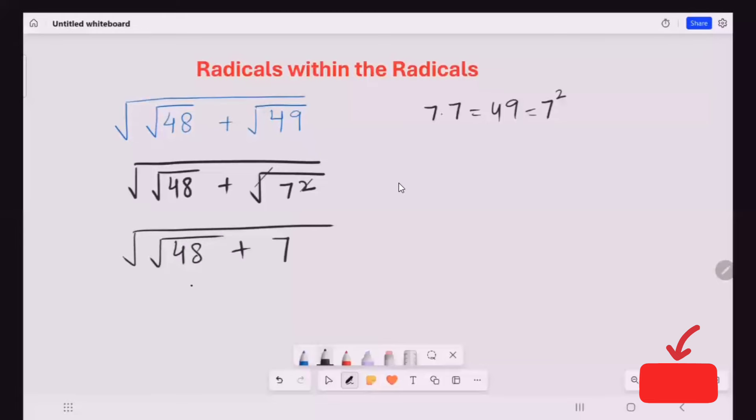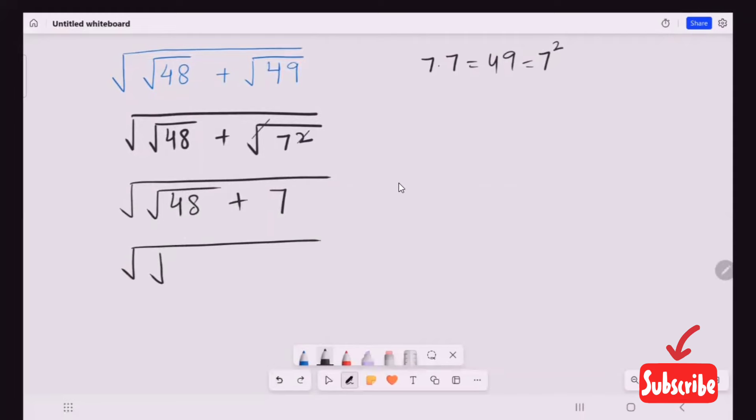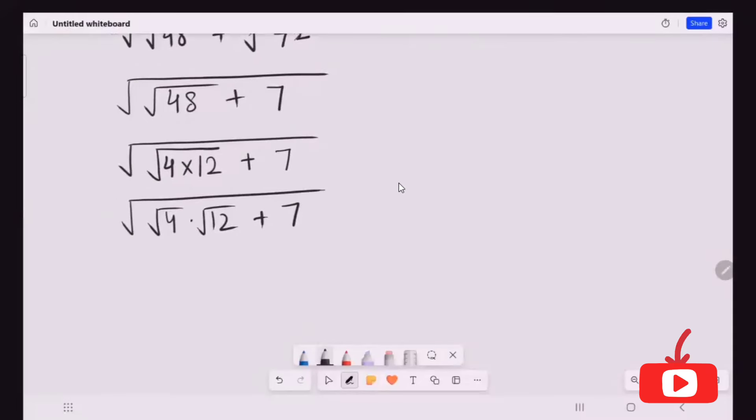Now next I'm going to factorize this. I'm going to write this 48 in this form. 4 times 12 times give you 48, and this 7 stays the same. 3 times 2 times.